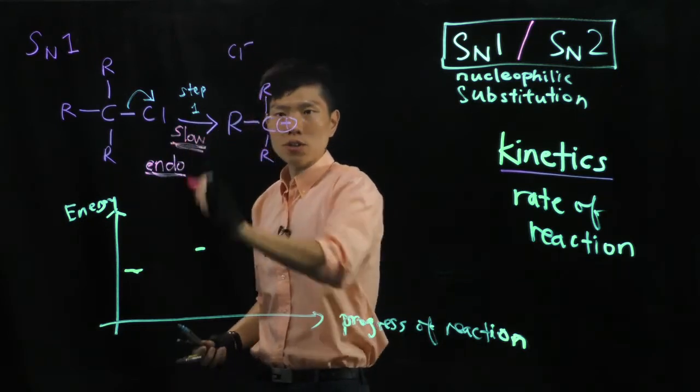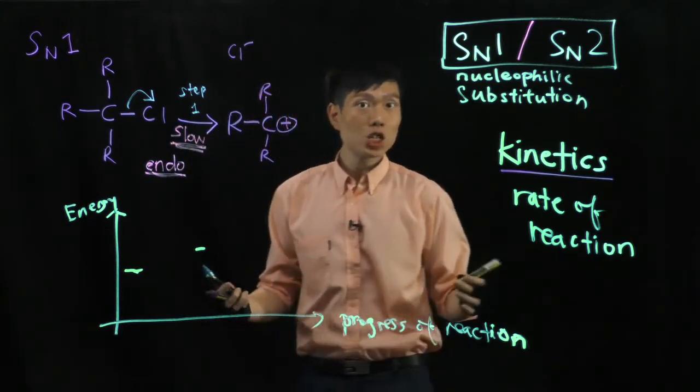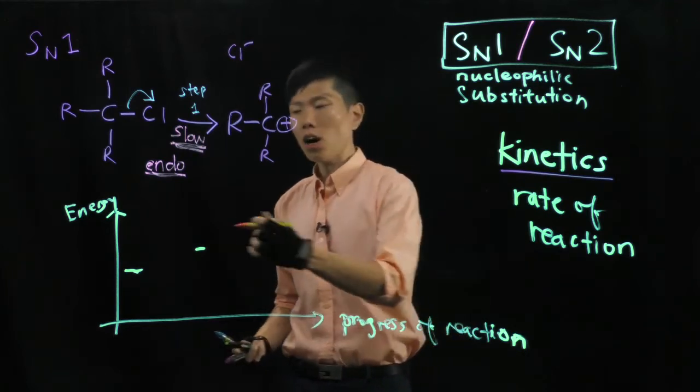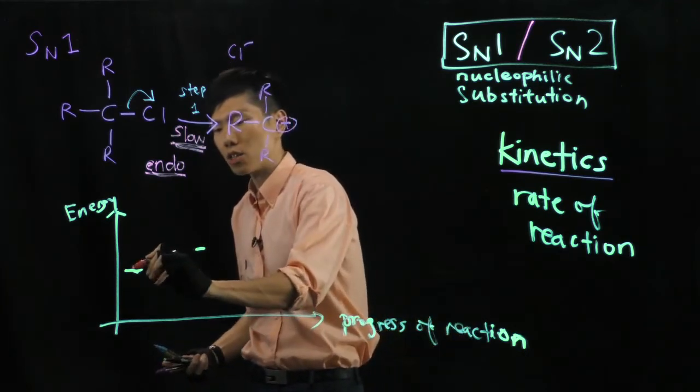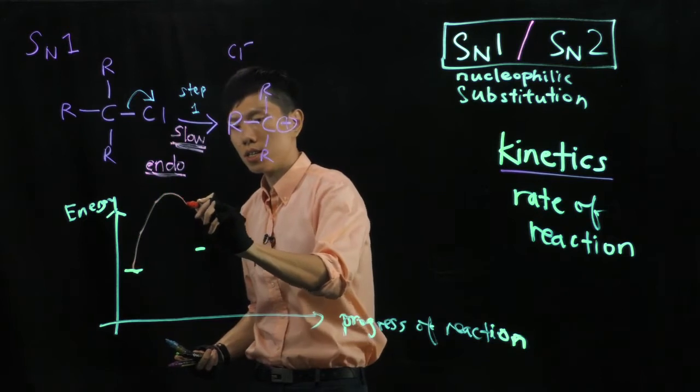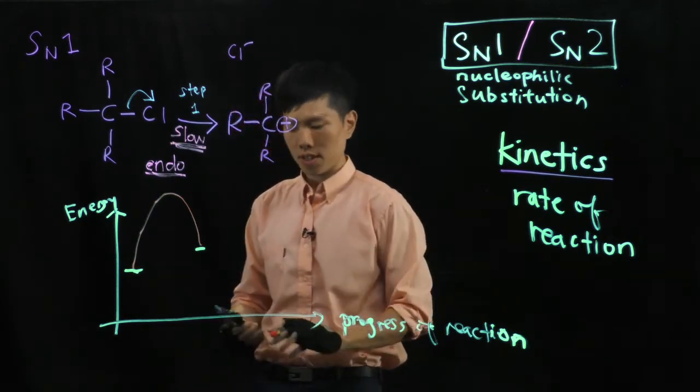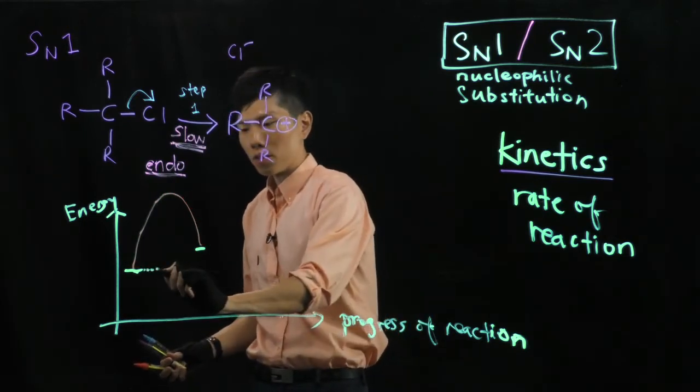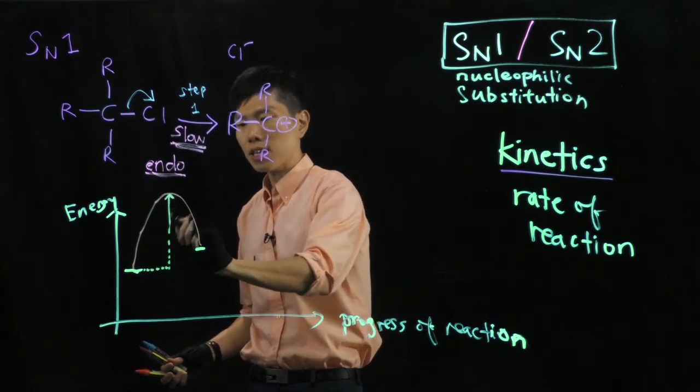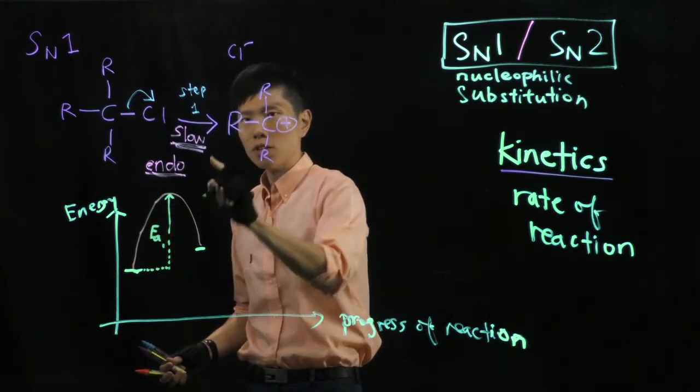Okay. When we talk about slow, what we mean is it has a very high activation energy. That means the energy barrier of this mechanism is high. So, the hump here is huge. Right. Recall from this point to the highest point here, this is your activation energy for the first step.